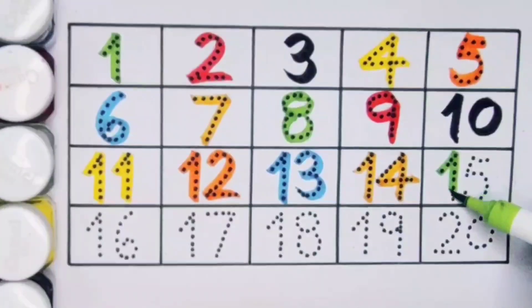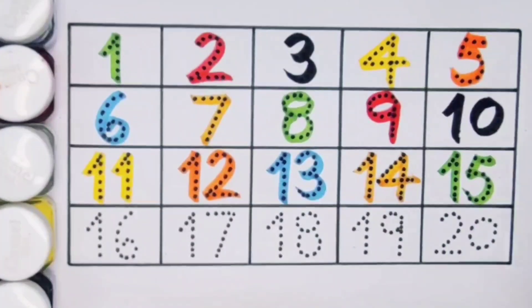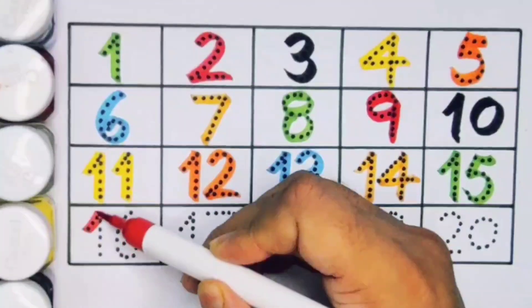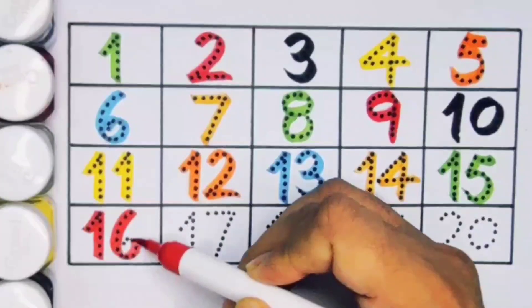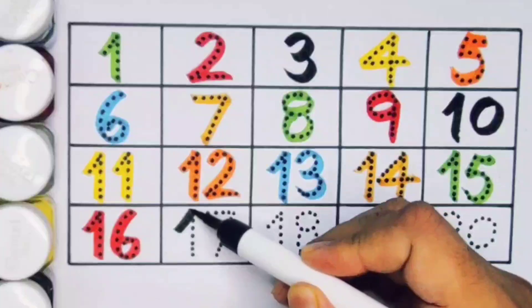Next kids, sixteen, one six sixteen, number sixteen. Next, seventeen, one seven seventeen, number seventeen.